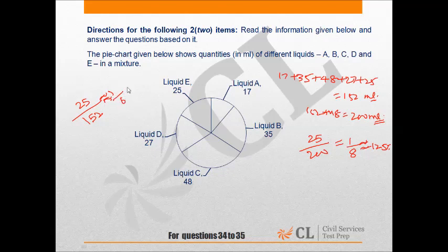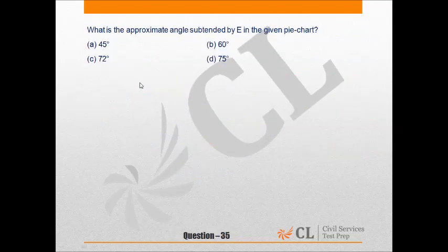In total pie chart, central angle is 360 degrees, so 1 sixth of 360 degrees would be equal to 60 degrees. Hence our answer for question 35 would be option B.